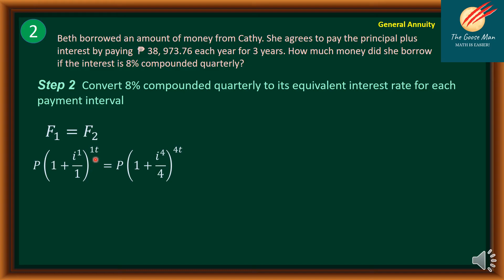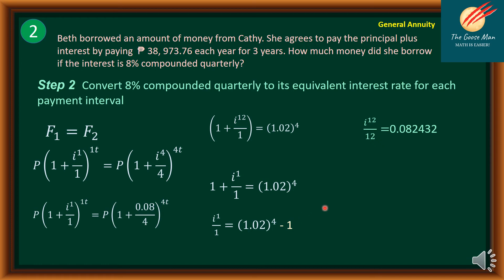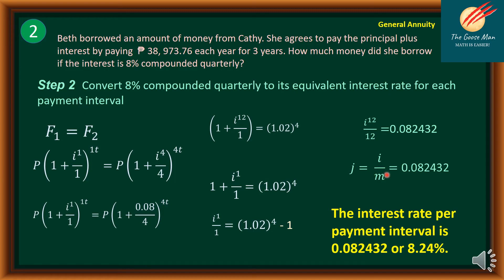The yearly payment and quarterly payment relationship: substituting I equals 8%, we get 1 plus 0.08 over 4, which simplifies to 1.02 raised to 4. So 1.02 raised to 4 equals 1 plus i raised to 1 over 1. Subtracting 1 from both sides: J equals 1.02 raised to 4 minus 1, which equals 0.0824, or 8.24%. Therefore, the equivalent interest rate per payment interval is 8.24%.